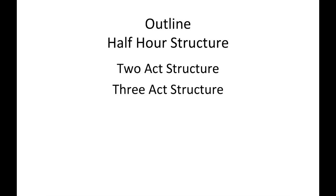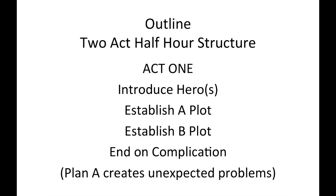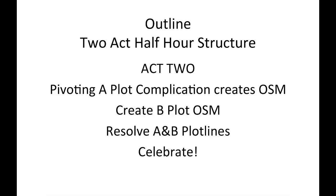In the half-hour world, there are basically two structures: the two-act structure and the three-act structure. In the two-act structure, each act is approximately 15 pages. In act one, you'll introduce your hero, establish the A-plot goal and B-plot goal, and end on a complication — typically your hero puts together a plan to achieve the goal, fails, and unexpected problems are created. In act two, your hero pivots from the A-plot complication, and in trying to resolve that problem, it creates your Oh Shit Moment. You also need a B-plot Oh Shit Moment, then resolve both A and B plot lines and celebrate the story's success.